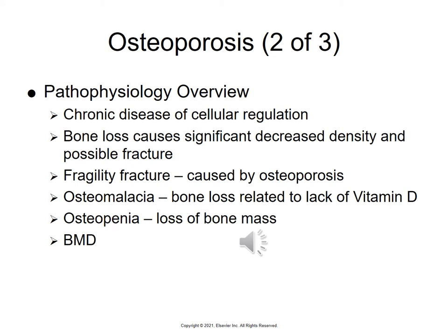When osteoclastic activity is greater than osteoblastic activity, you have osteopenia and osteoporosis. Osteoclastic activity is when bone is being destroyed or reabsorbed, while osteoblastic means there is bone-building activity happening. If bone is being destroyed more than it is being built, you have a low bone mass.